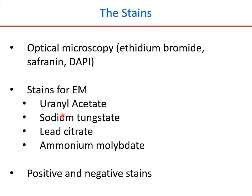Uranyl acetate is known as the universal stain molecule — most electron microscope experiments are done with uranyl acetate. It is worth discussing this further. The word uranium may be alarming because uranium is known for radioactivity. However, the uranium used here is classified as depleted uranium — one which has lost all its radioactivity. As with any radioactive material with a half-life period, its activity reduces to half after each half-life cycle.